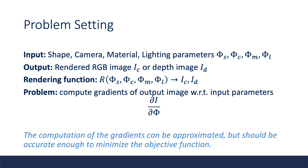Next, we present a formal problem setting. The input to the renderer is a set of scene parameters like shape, camera, materials, and lighting parameters. The output is a rendered image like an RGB image or depth image. The rendering function takes those scene parameters and generates the output image. The problem is to compute the gradient of the output image with respect to the input scene parameters. Usually, the computation of the gradient can be approximated, but it should be accurate enough to provide information to minimize the objective function.